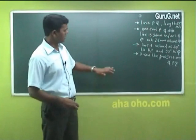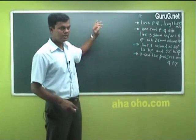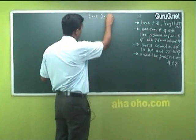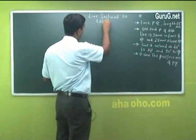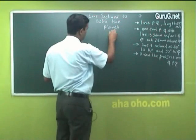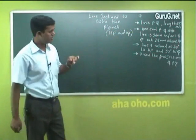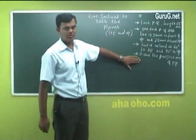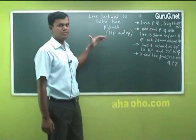We are going to discuss the fifth option in the lines — five categories. The topic is line inclined to both the planes. Based on this question, it will be very easy to understand, instead of just speaking orally about imagining something and thinking about perpendicular, parallel, inclined.